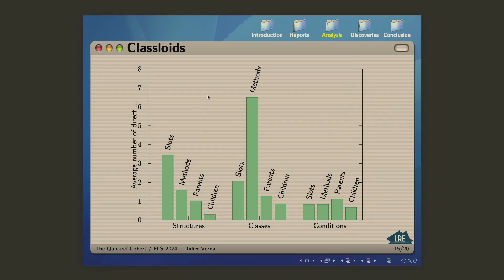Classoids, that's also quite interesting, I think. This is the average number of things you get in classes. These are structures, classes, and conditions. Interestingly, the average number of methods per class, and again, both private and public, is approximately eight. There is not many slots in average in classes because you have something like, in average, slightly more than two slots per class in QuickLisp. The number of average slots in structures seems to be higher.